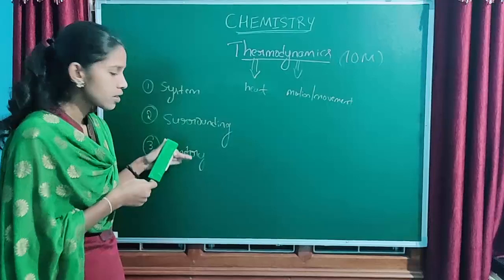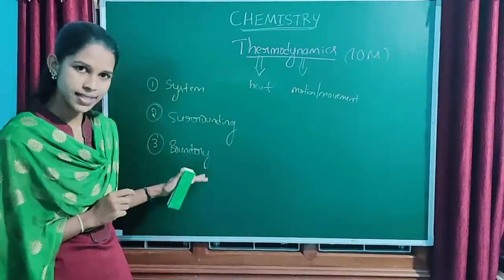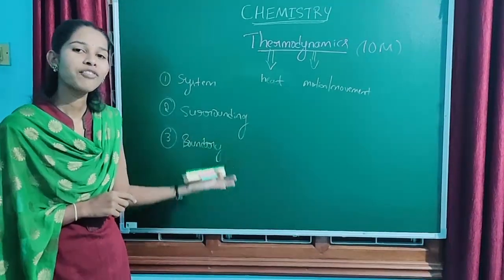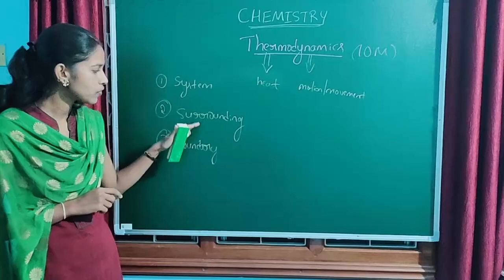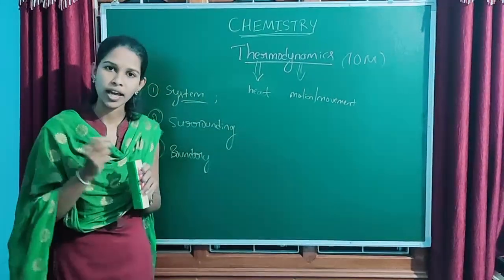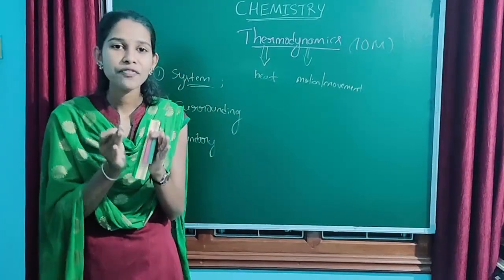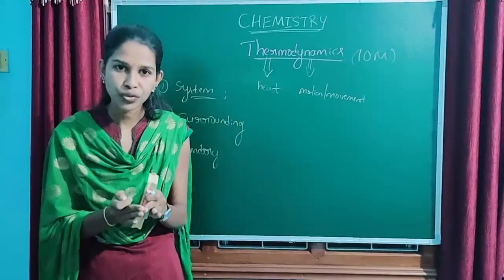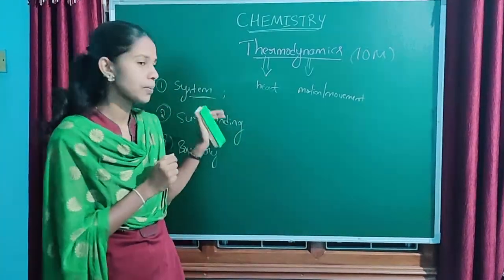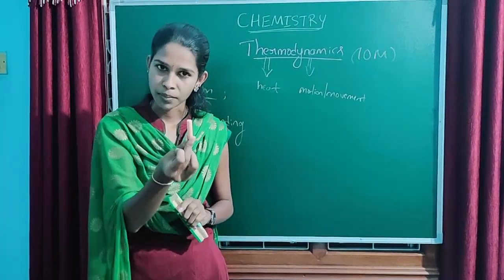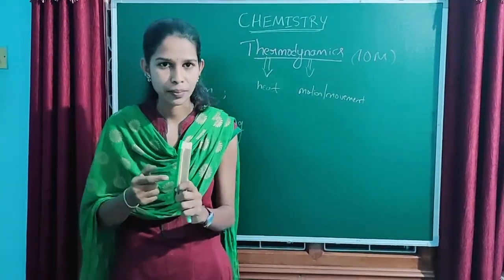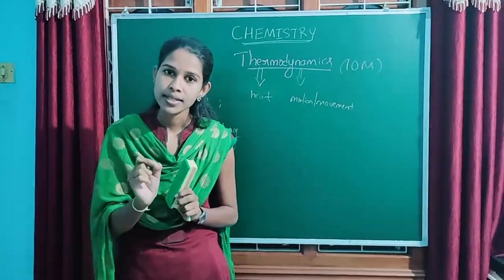You definitely have come across these terms in your day-to-day life, but the meaning of these terms in this chapter will be completely different. In this chapter, the meaning of these terms will be different. Now let us discuss about them one by one. What is system? In thermodynamics, system means any specific part of the universe or specific portion of the universe which is under thermodynamic consideration or thermodynamic study is called system.